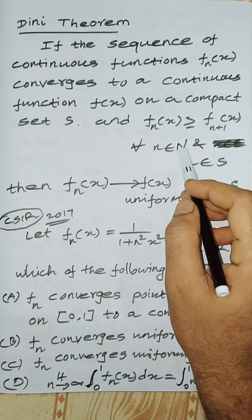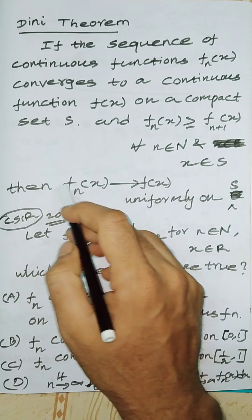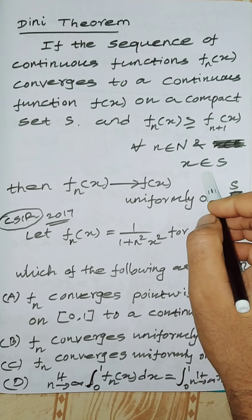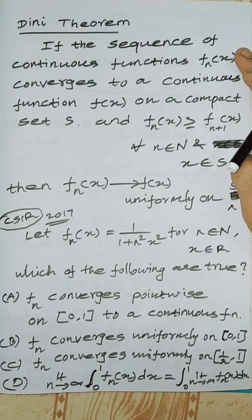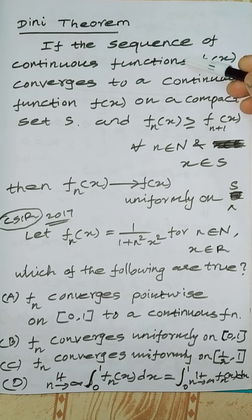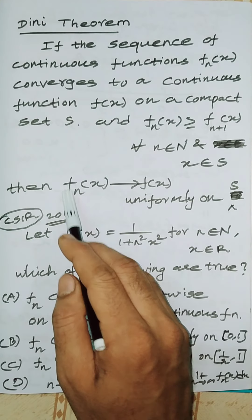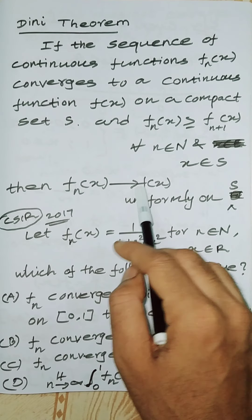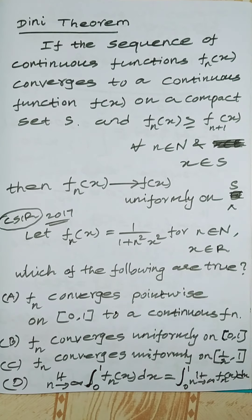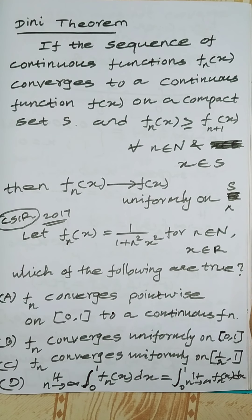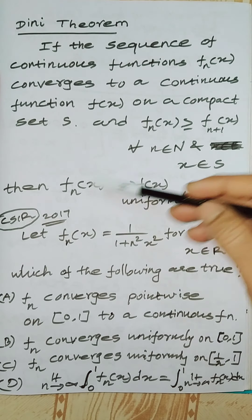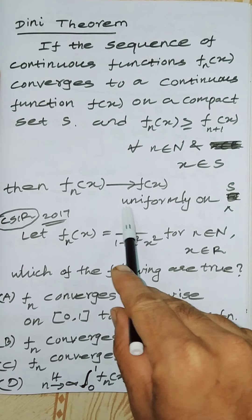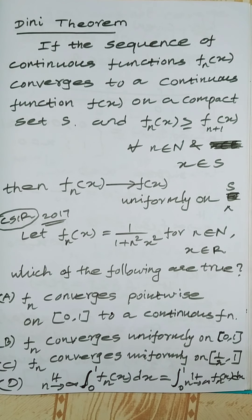For all n belonging to natural number N, and for all x belonging to the compact set S — given these conditions are satisfied — then fn(x) converges uniformly to the continuous function f(x). That is, fn(x) converges to f(x) uniformly on the compact set. Please note this theorem.